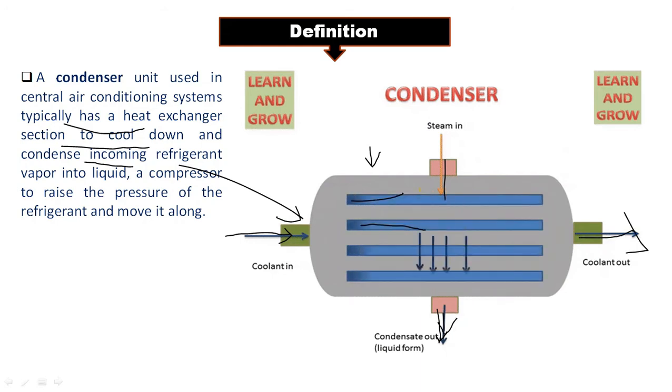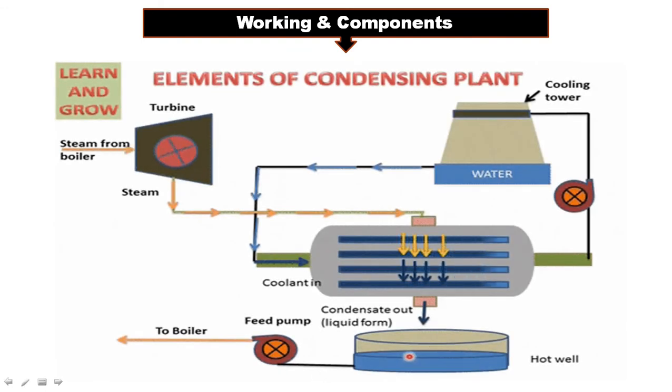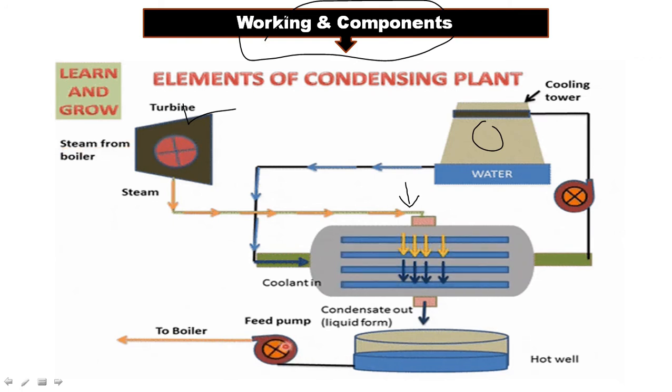So the coolant in and out, this is basically the purpose of the condenser. Now let's discuss its working and components. First, the components. The first component is the turbine, which generates the hot steam at this point. The second is the water cooling tower. From the water cooling tower, we use the coolant to